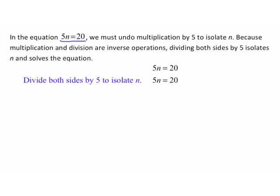In the equation 5n equals 20, we must undo multiplication by 5 to isolate the variable n. Since multiplication and division are inverse operations, dividing both sides by 5 isolates n. I divide the left side by 5 and do the same to the other side. The common factors of 5 divide out on the left, leaving n over 1. On the right, 20 divided by 5 is 4. Any number over 1 is just that number, so n equals 4.